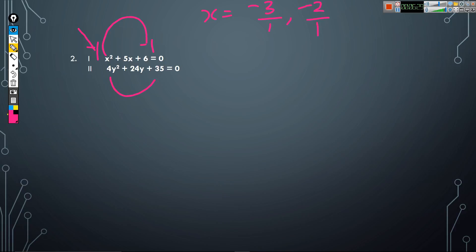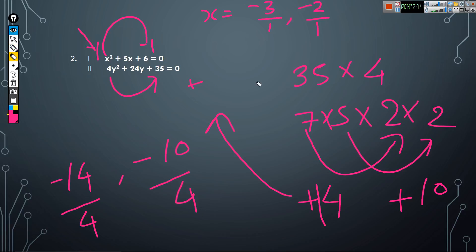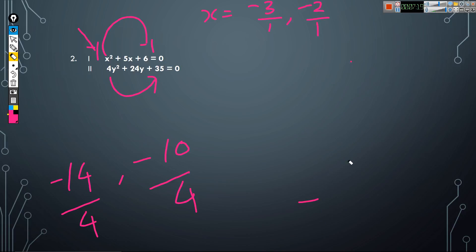The next equation is 35y² + 24y + 4 = 0. Multiply 35 by 4. We need to bring plus 24. Factorize: 7 × 5 = 35 and 2 × 2 = 4. So 7 × 2 = 14 and 5 × 2 = 10; plus 14 + plus 10 = plus 24, and plus 14 × plus 10 = 140 = 35 × 4. Write the opposite signs: minus 14 and minus 10. Divide by the coefficient of y², which is 35 × 4. So y = minus 14/70 = minus 7/2... wait, the value of y is minus 7/2 and minus 5/2.